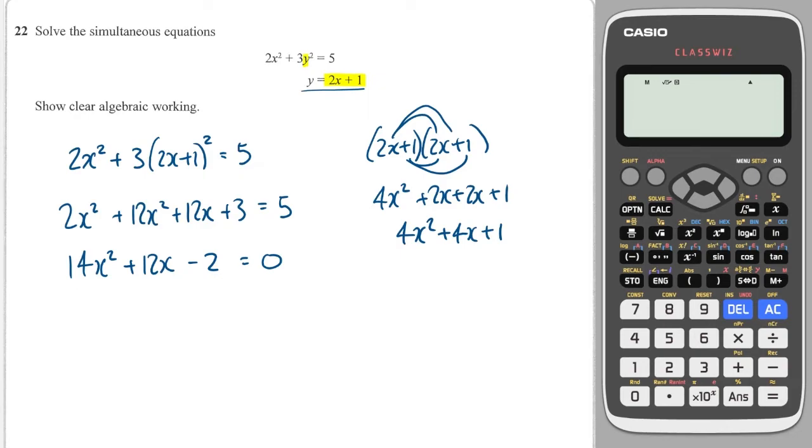Now we've got a quadratic that we need to solve, and I'm going to do it by factorising using the AC method. So A times C is 14 times minus 2, because this is the A, this is the C, and this is the B. So we're going to get 14 times minus 2, which is minus 28, and the B term is going to be 12. So we're looking for two numbers that times together to make minus 28 and add to make positive 12. Those two numbers are 14 and minus 2.